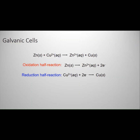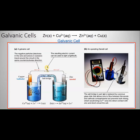So how can you construct a galvanic cell? You can build this in the lab. You need two beakers. One beaker contains copper sulfate — you can see the blue color here indicating the copper sulfate. Another beaker contains zinc sulfate, which is colorless.